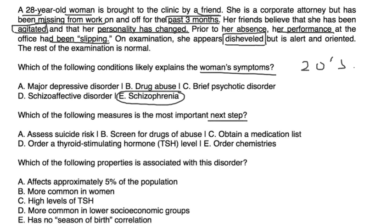Which of the following is the most important next step? Remember, always assess suicide risk — that is a very important thing. Five percent have committed suicide and 20% have attempted, so assessing suicide risk is critical.